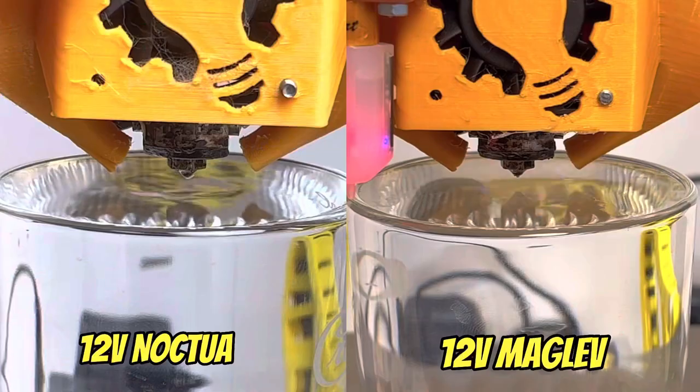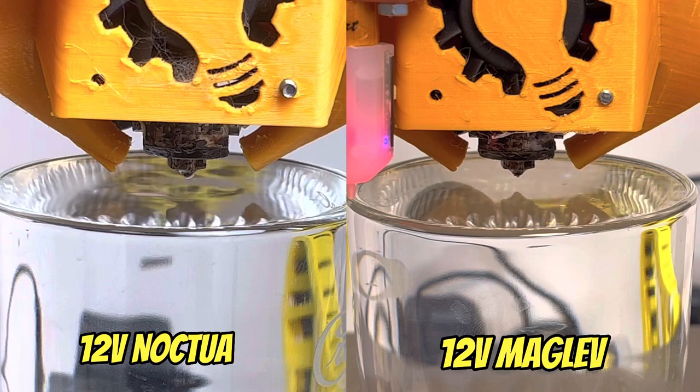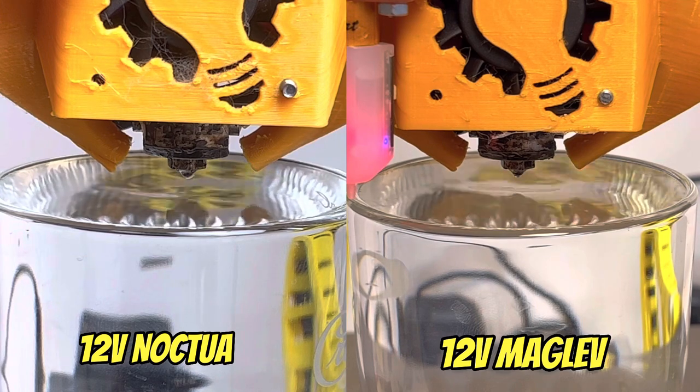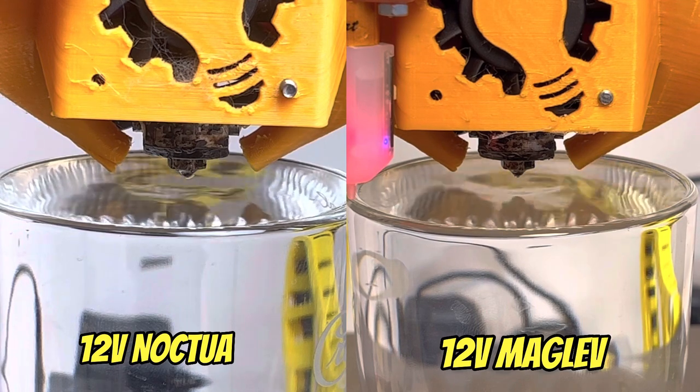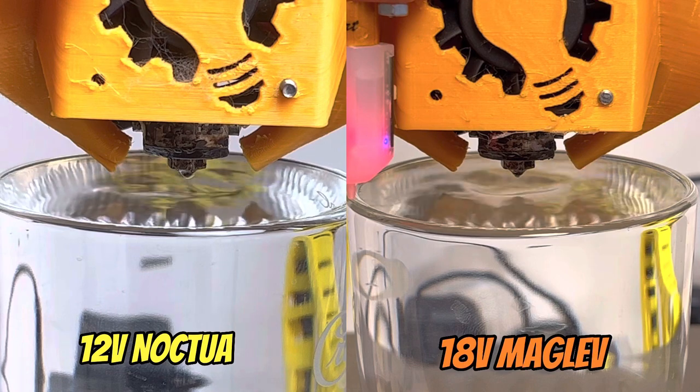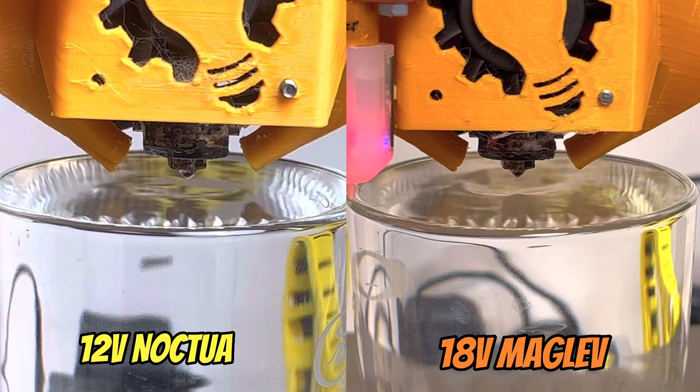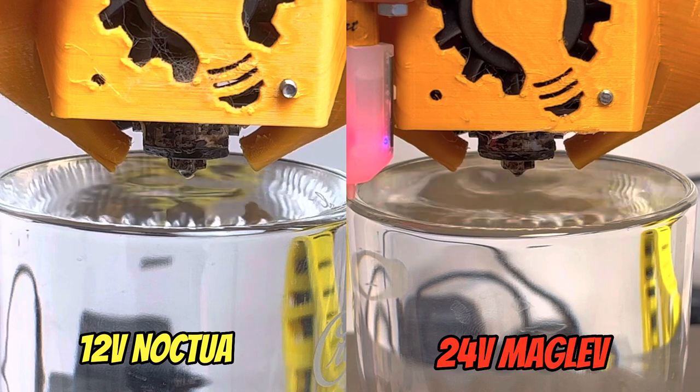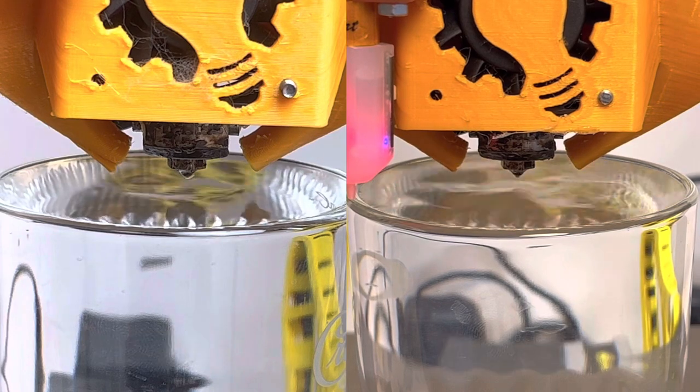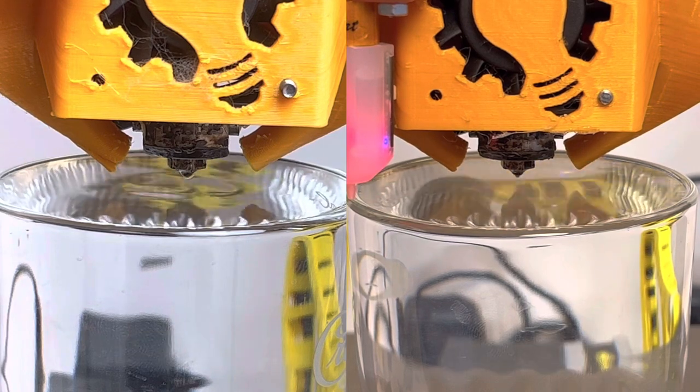Now with a little bit of soldering work out of the way, let's see if these bad boys turn on. Oh yeah! Now let's look at the water cup test. The 12-volt Noctua appears to be outperforming the 12-volt maglev. At 18 volts the maglev appears to be similar, maybe even a little bit better in performance. And when we crank it up to 24 volts, there's no competition—the maglev just blows it out of the water. Literally.